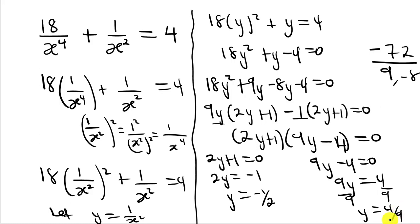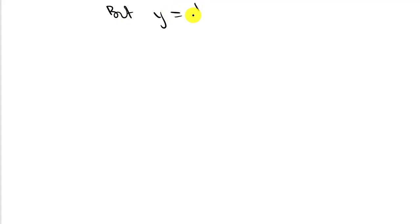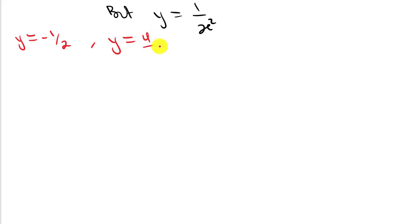We are not done — this is just the first part. We solved for y, but the question asks for x. So we go back and use what y represents: y = 1 over x squared. We had two values: y = −1/2 and y = 4/9.